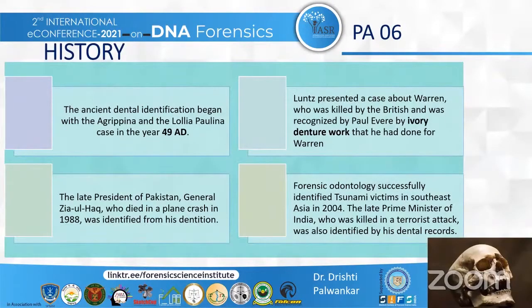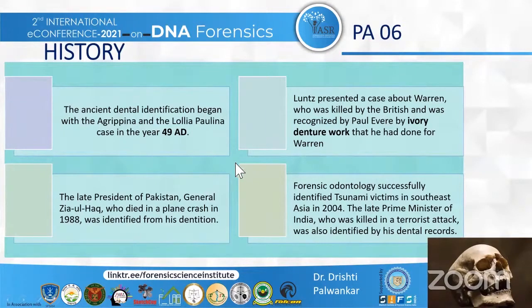A little brief about the history. Dental identification began with the Agrippina and Lola Palina case in 49 AD. Later, Luntz also presented a case about Warren, who was killed by the British and recognized by Paul Revere through ivory denture work that he had done for Warren. This was the first case where a dentist was called for help in forensic odontology.